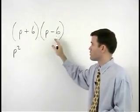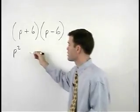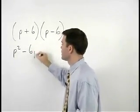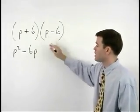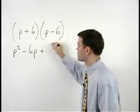Plus the product of the outer terms, P times negative 6, which is negative 6P, plus the product of the inner terms, positive 6 times P, which is positive 6P.